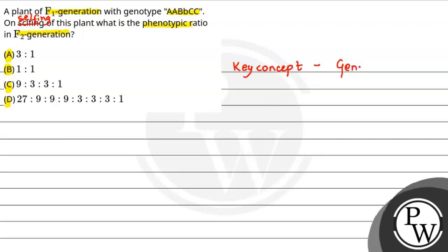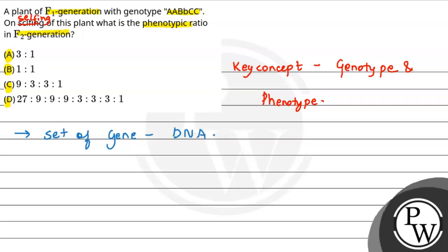First, let us see the key concepts for this question. The key concept is genotype and phenotype. Genotype is our set of genes present in DNA that are responsible for unique traits and characters. Phenotype is our physical appearance or characters of an individual.